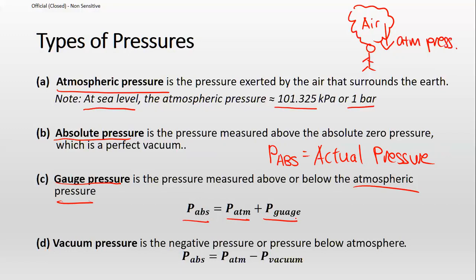In summary: absolute pressure is the actual pressure of your fluid. Gauge pressure is the pressure measured by an instrument. To get back your absolute pressure, you add it to the atmospheric pressure.